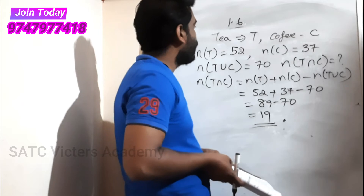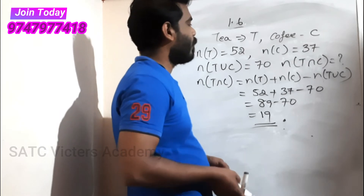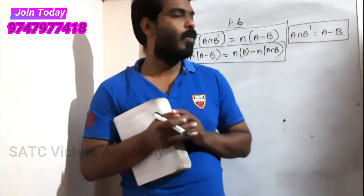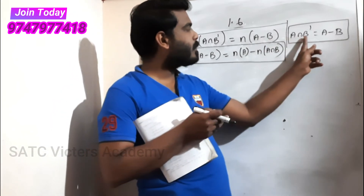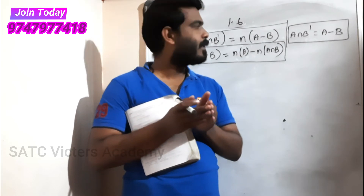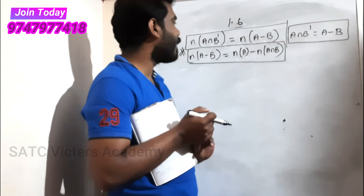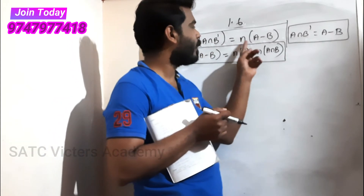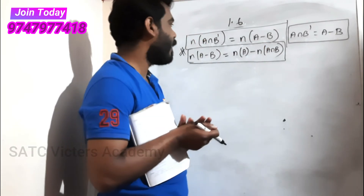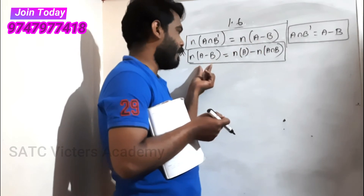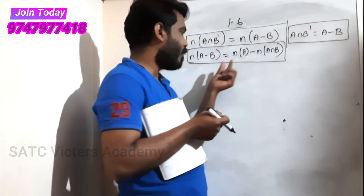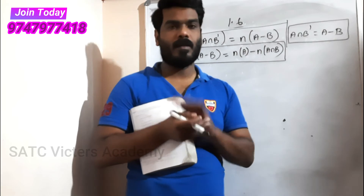Questions 7 and 8 follow the same method. Here we introduce the formula for A minus B: A - B is the same as A∩B complement. The formula is: n(A - B) = n(A) - n(A∩B). This is important for finding elements in one set but not the other.